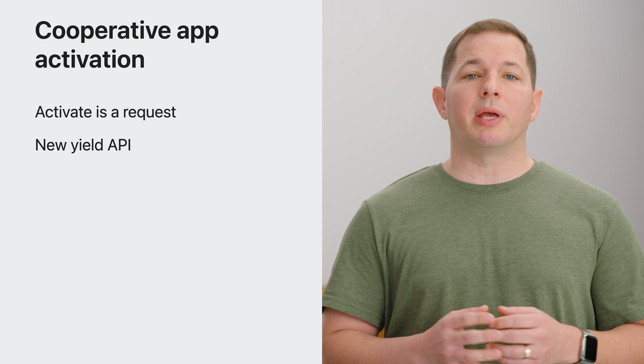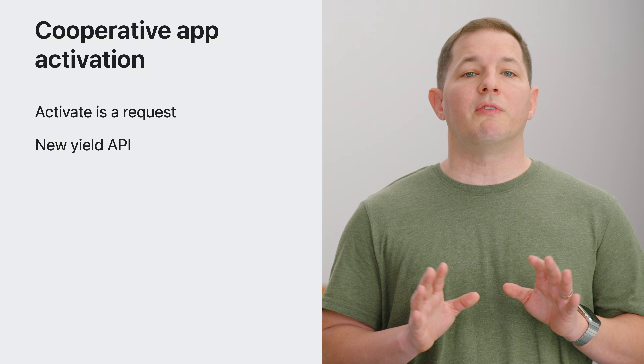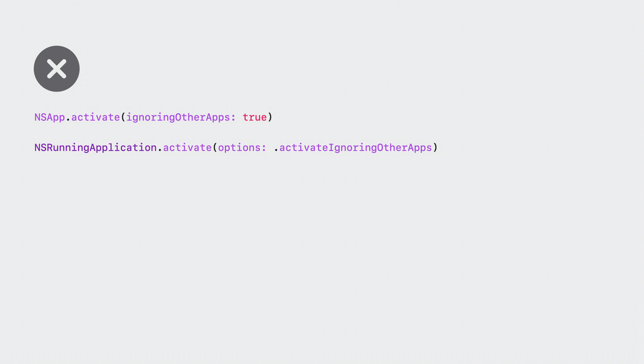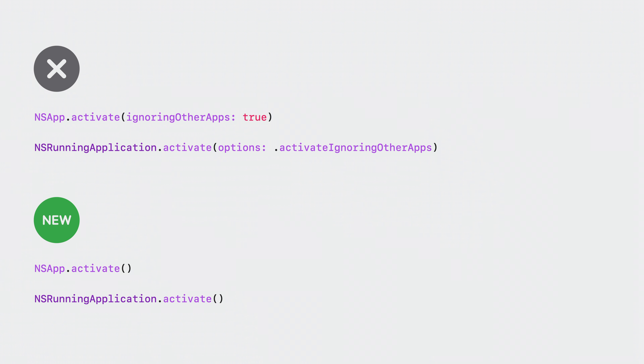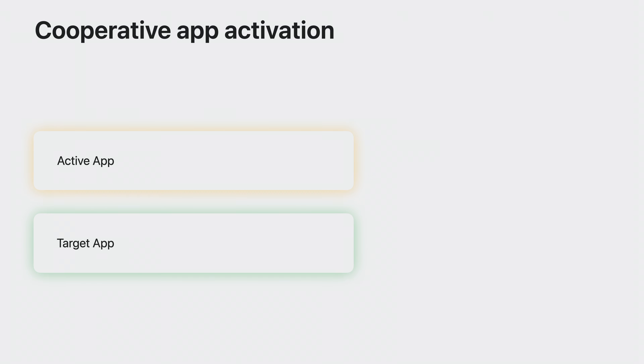The new yield API allows an application to influence the context of a future activation request. Now that activate is a request, the ignoring other apps parameter and option are ignored. In macOS Sonoma, the activateIgnoringOtherApps function and the activateIgnoringOtherApps option are both deprecated. Replace them with the new activate APIs for NSApplication and NSRunningApplication.